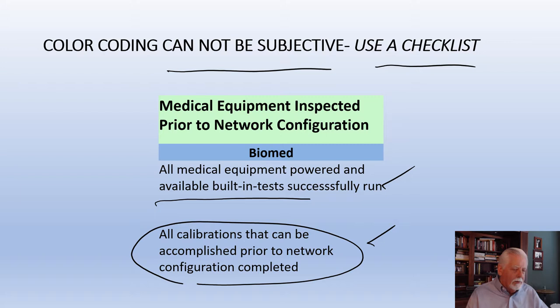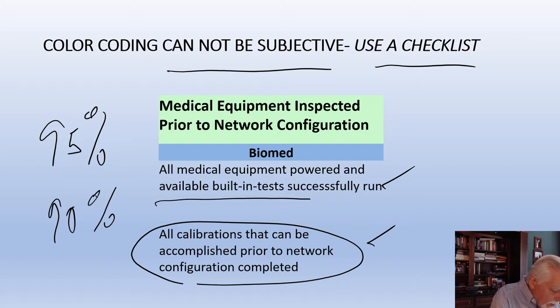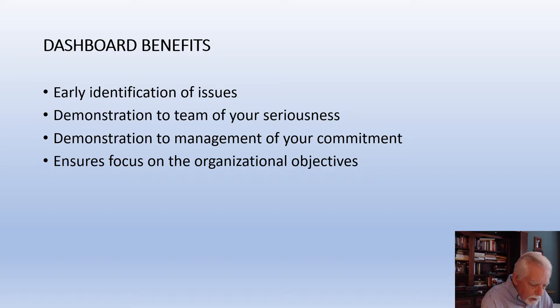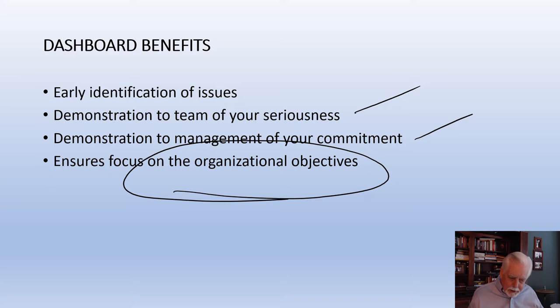Another example is staffing — a project manager can't just say 'I feel pretty good, let's make it green.' It can only be green if you're 95% staffed; 90% staffed is yellow; below 85-90% is red. Specific data must drive the color designation. The benefits: early identification of issues, demonstrating seriousness to your team and commitment to management, and if you select metrics correctly you can focus on organizational objectives — like getting a hospital to see its first patient.